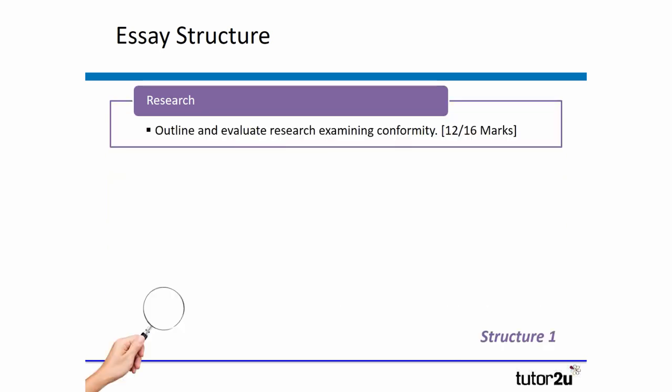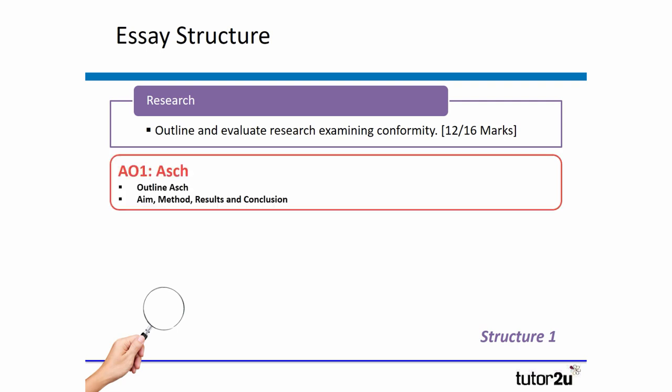Let's imagine you've got this question: 'Outline and evaluate research examining conformity' as a 12 or 16 marker. I would start by presenting all of my AO1 knowledge, outlining the Asch study and bringing in the aim, method, results, and conclusion.